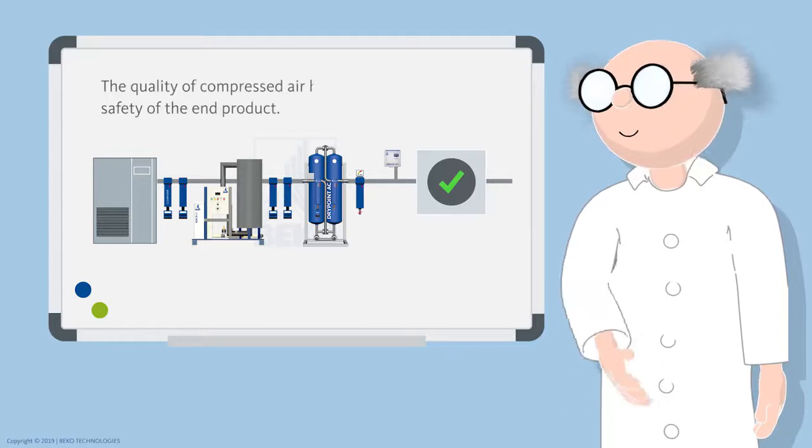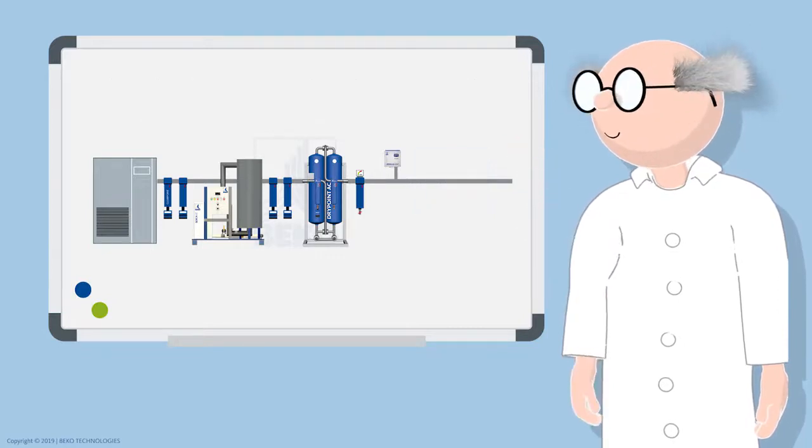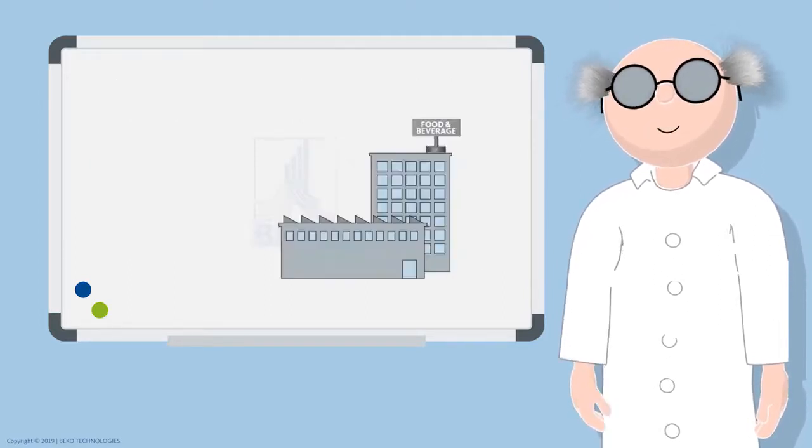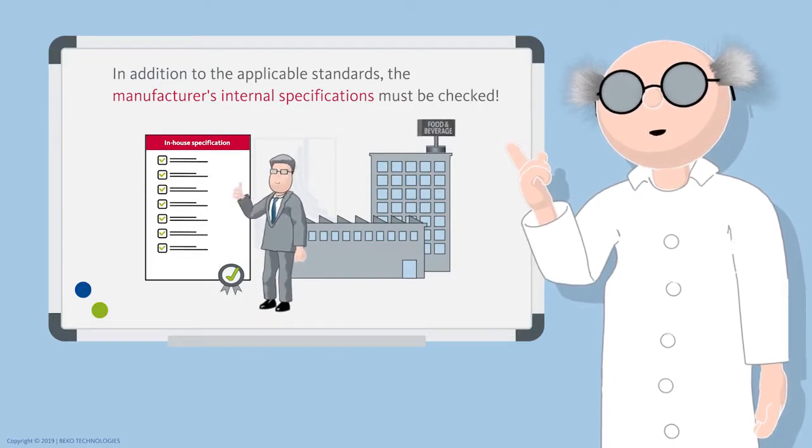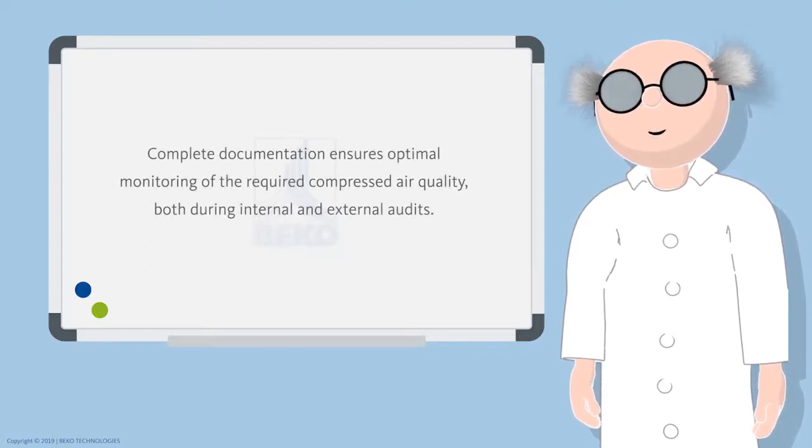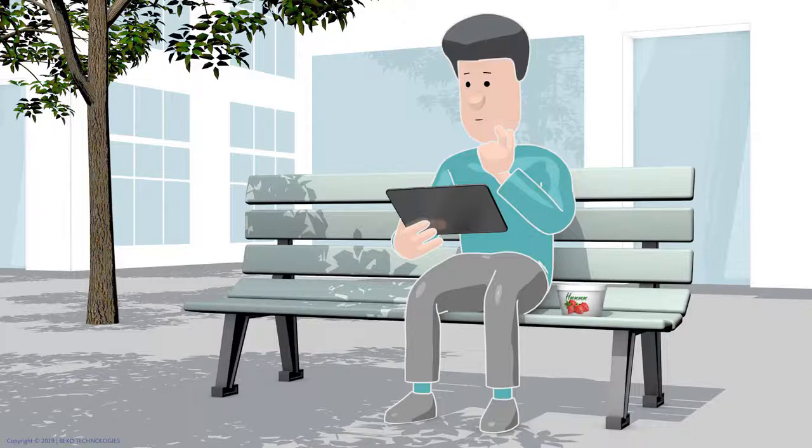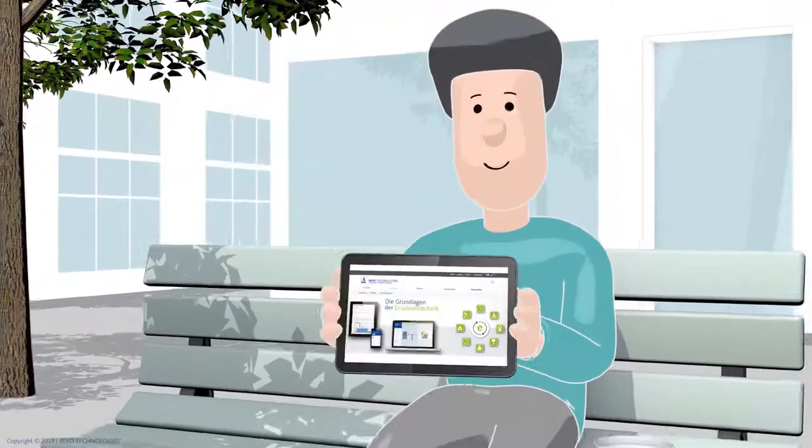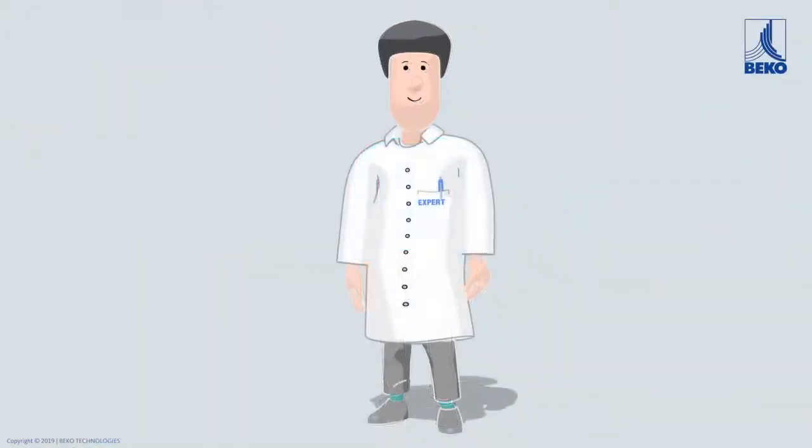To sum up, the quality of compressed air has a direct impact on the safety of the end product. Therefore, it is essential for a safe process to measure, check, and record the compressed air quality completely. In addition to the applicable standards and guidelines, this evaluation is based on the manufacturer's in-house specifications. Complete documentation guarantees optimum monitoring of the required compressed air quality, even during internal and external audits. The complex processes and connections require a technical understanding of the production medium compressed air. BEKO Technologies has its own e-learning module on this subject. The responsibility lies with you.